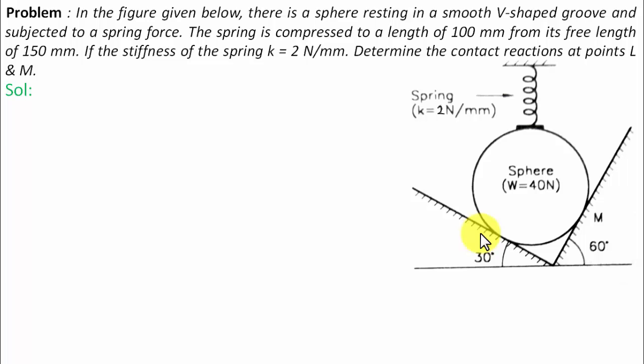If the stiffness of the spring k equals 2 N/mm, determine the contact reactions at points L and M. Let us try to understand this arrangement. There is this sphere whose weight is 40 Newtons and there is this V-groove onto which this sphere is resting.